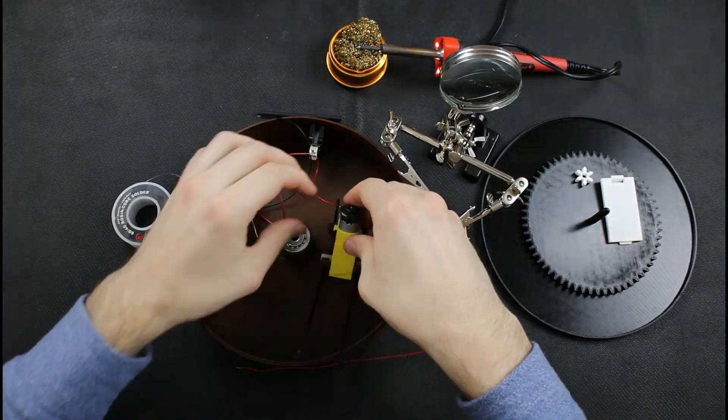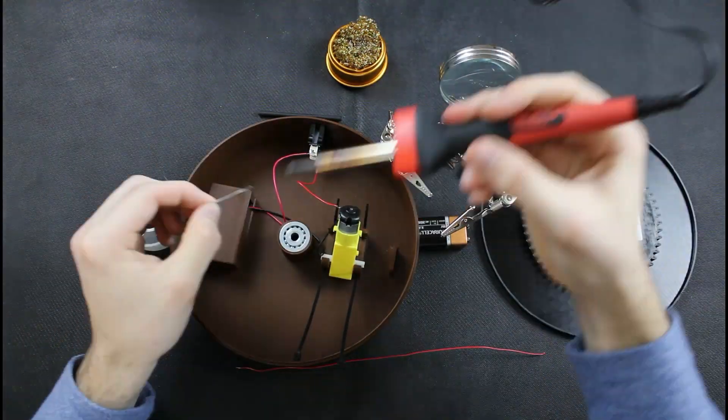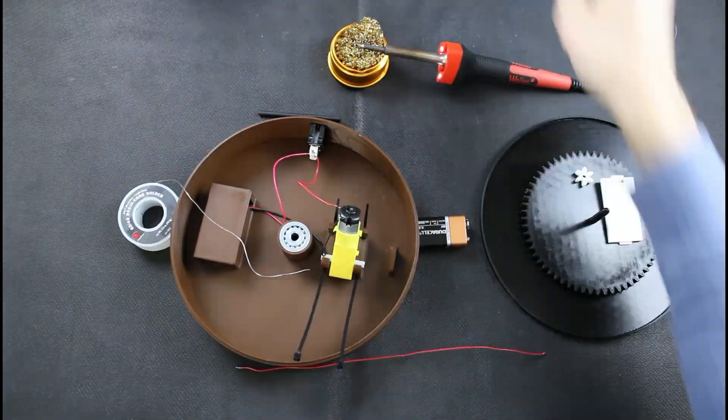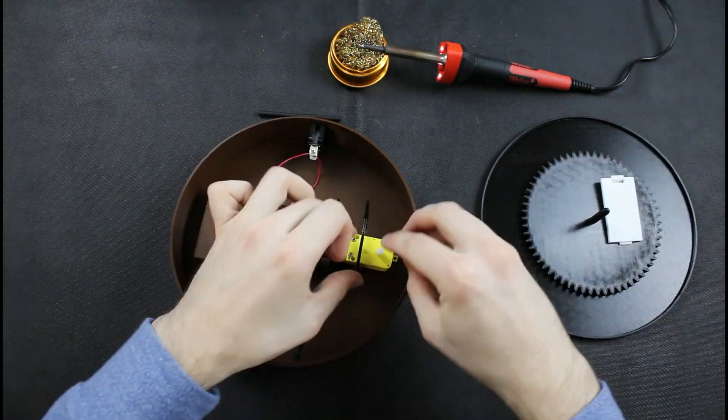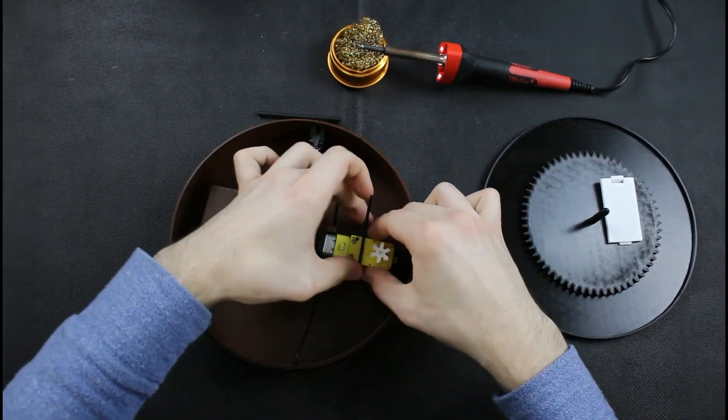And then next I'm going to solder my negative end of my battery clip to the other end of my DC motor. And then I'll zip tie the motor into place and press fit my smaller gear onto the motor.